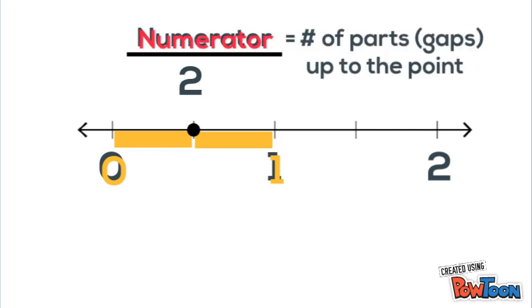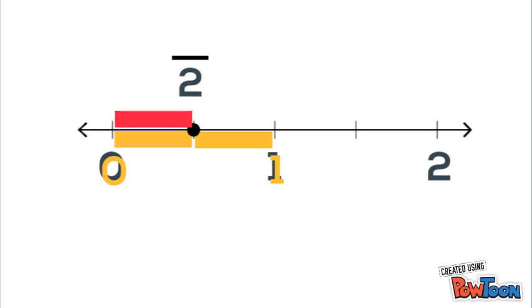The numerator is the number of equal parts or gaps up to our point. So we see that there is 1 gap. So our numerator is 1. So this dot represents the fraction 1 half.